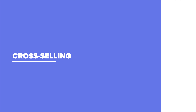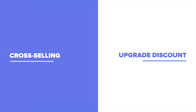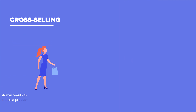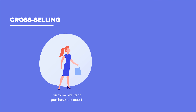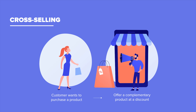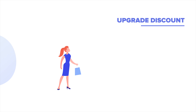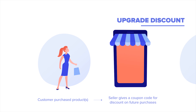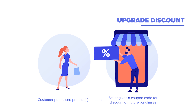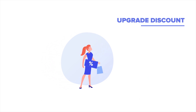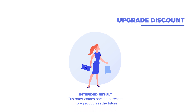Before we go, let's take a look at the difference between cross-selling and the upgrade feature, which is also another free marketing tool that we offer at Payit. With cross-selling, you are encouraging your customers to purchase a complementary product along with the main product by offering a discount on the complementary product — both products must be purchased at the same time to enjoy the discount. With upgrades, you are sending your customers a discount code after they have completed their purchase, in the hopes that the discount code will make them come back to your store at a later date to make another purchase.